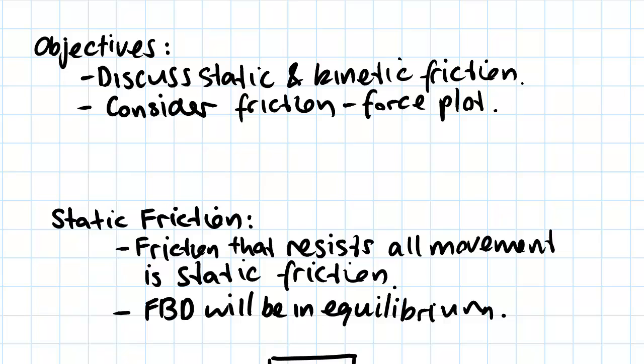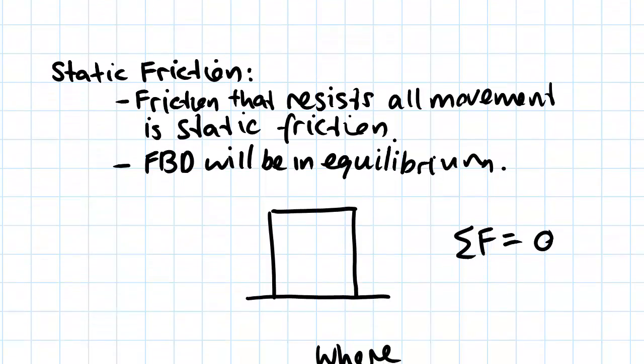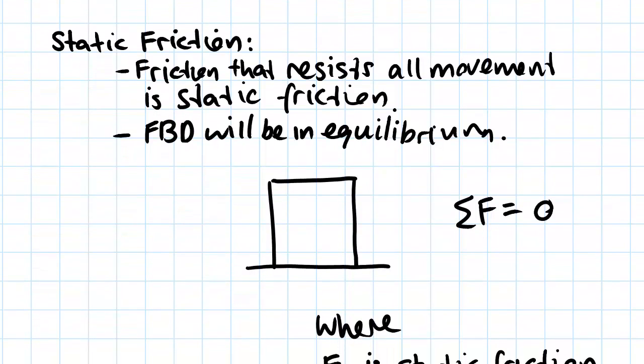So what I've got here, I've just written down static friction. It's basically just friction that resists all movement. So whenever we are applying a force to some kind of object and the object isn't moving, then the thing that is stopping the object from moving is what we call static friction.